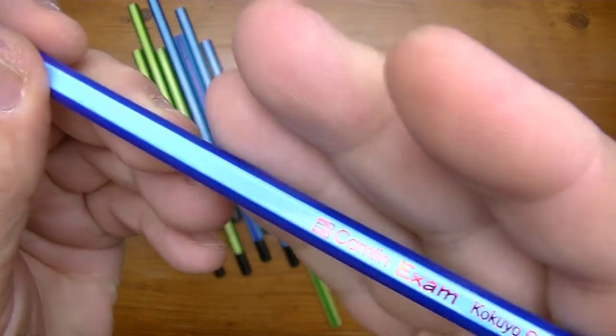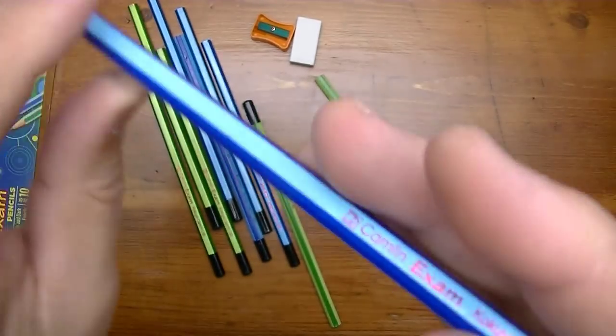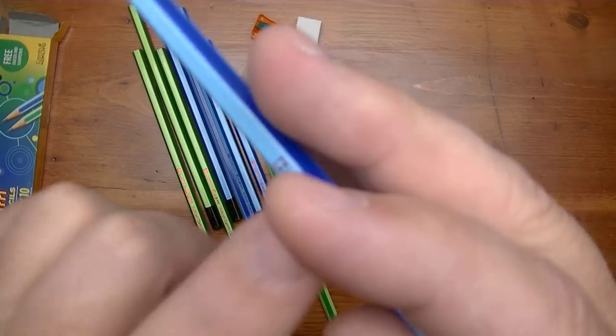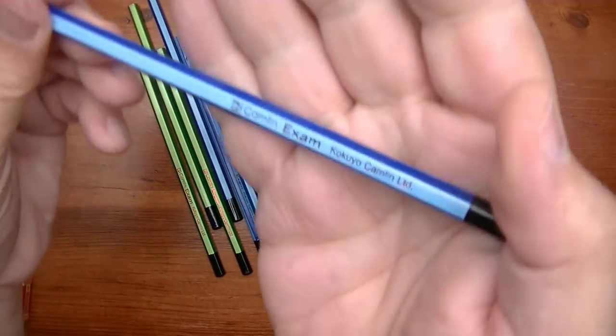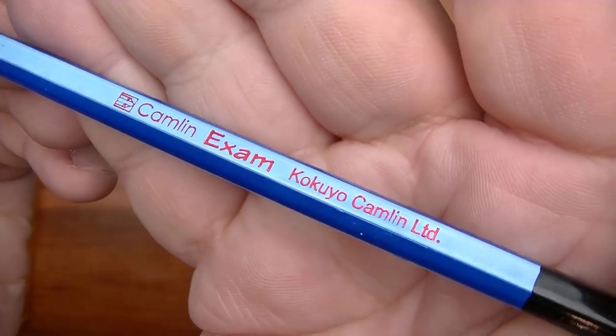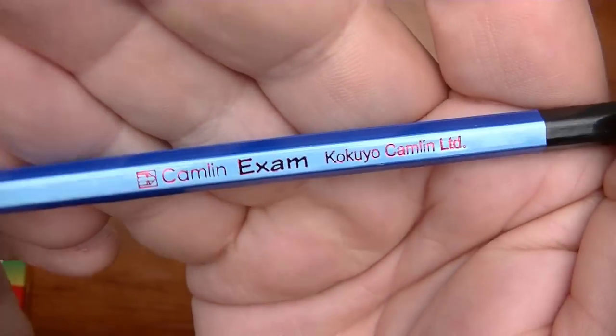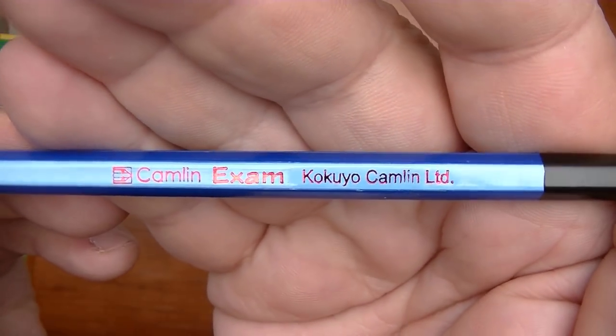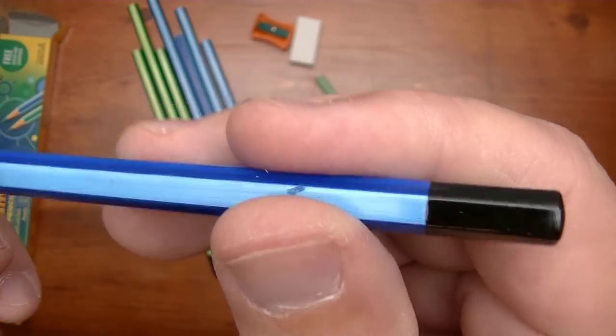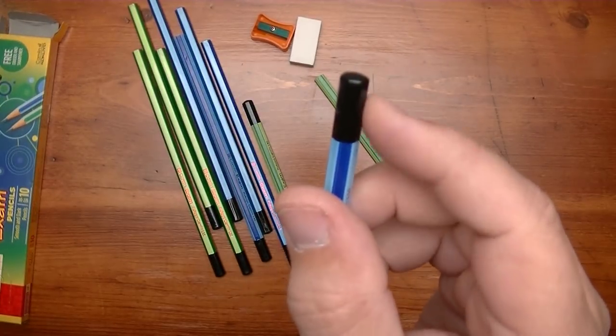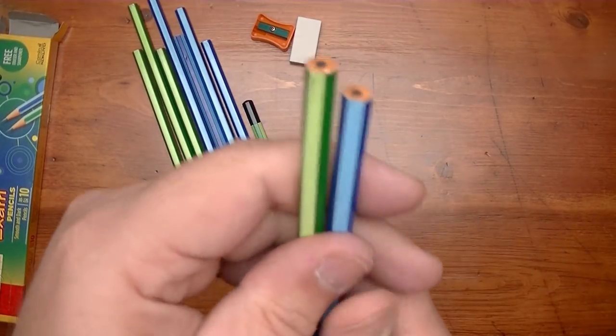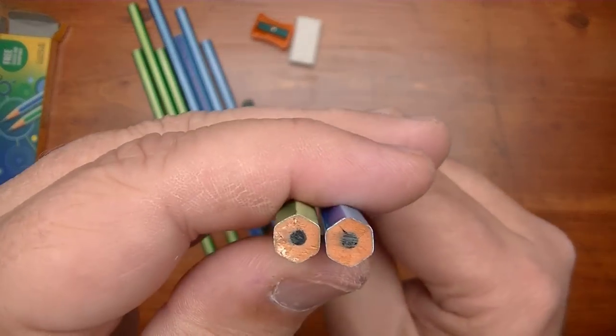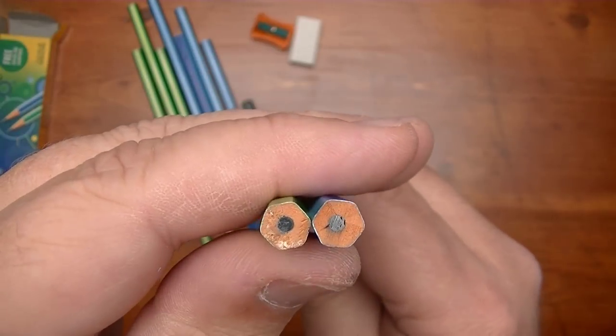Then the blue one. You have the dark blue with a more baby blue in between. And again it's using the red foil for the lettering and the same wording, Camlin exam, Kokuyo Camlin Limited. Also has the black dip. There's no eraser. And as you can see all these pencils are not pre-sharpened.